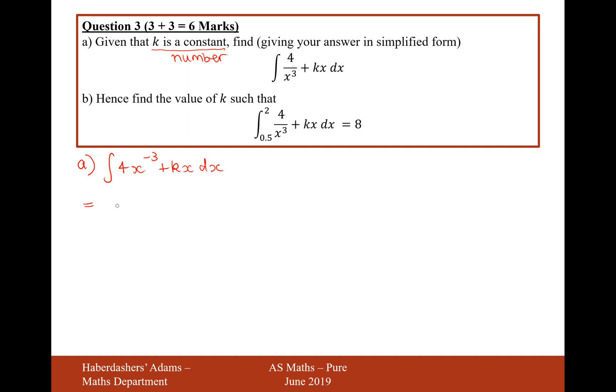So it's going to be increase the power by 1, so minus 3 will increase to minus 2, and divide by the new power. 4 divided by minus 2 is minus 2. Then it's going to be plus k is just a number, so we're integrating x here. That'll be x² and then divide by 2, so it's going to be k divided by 2 plus c.